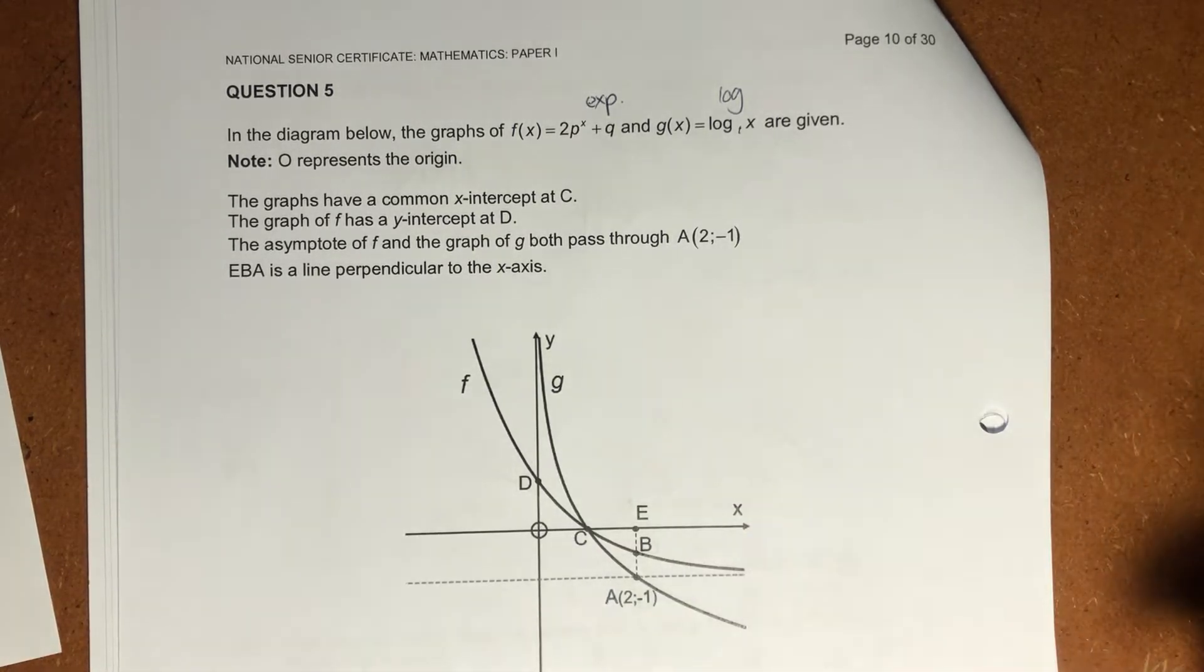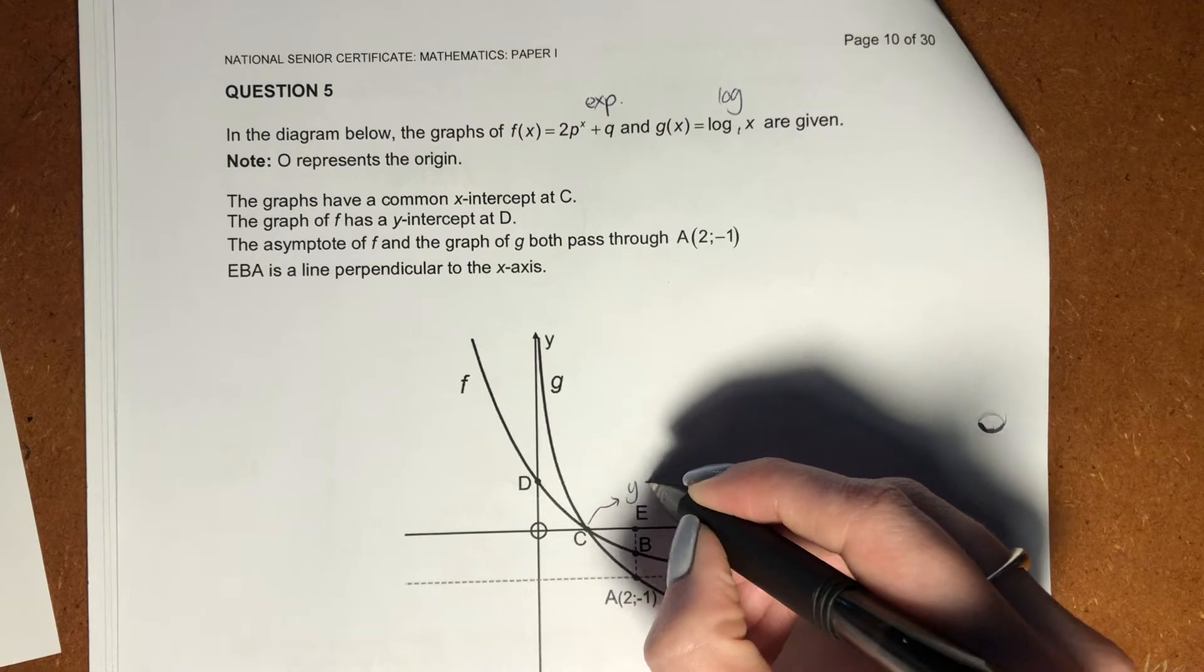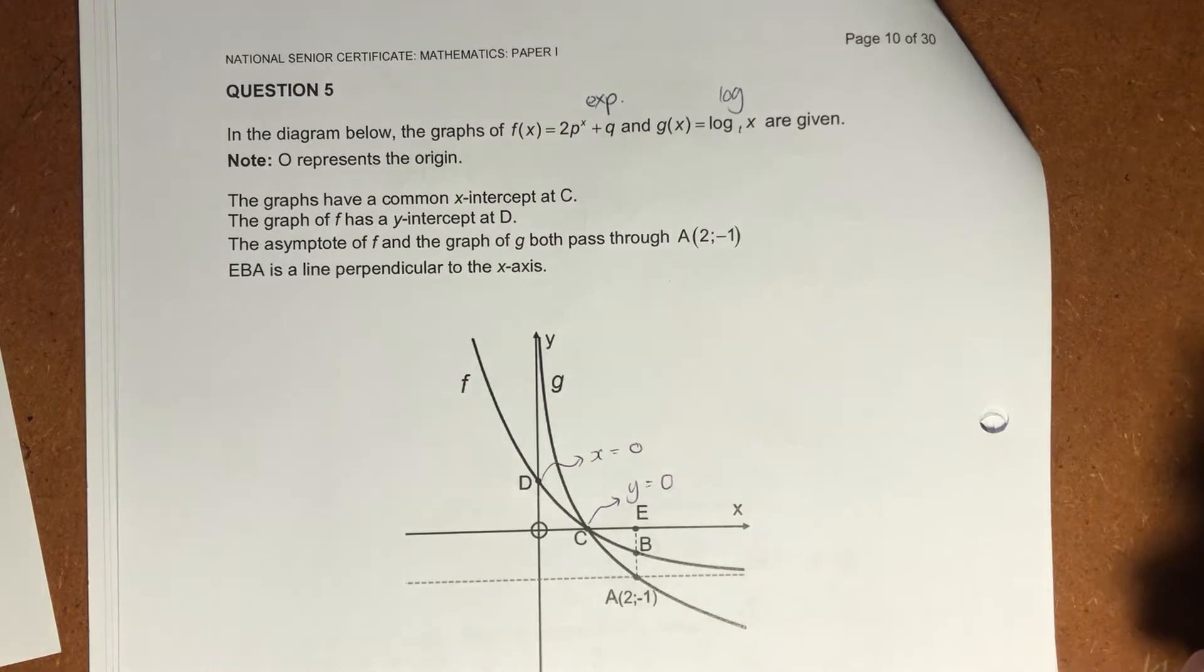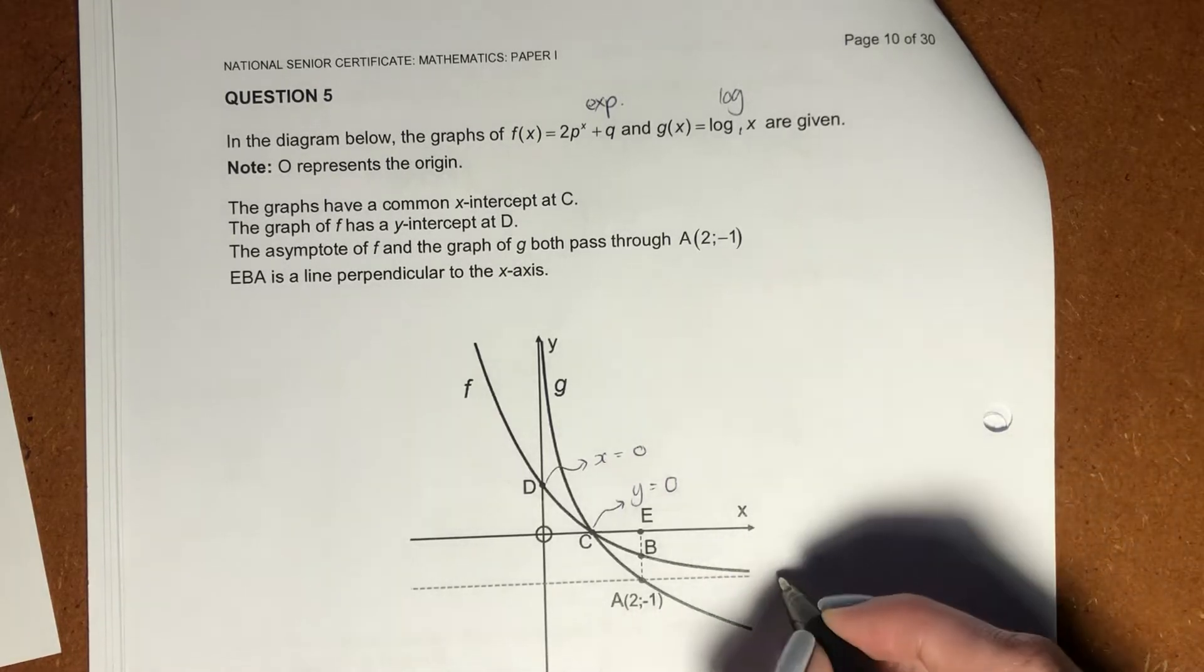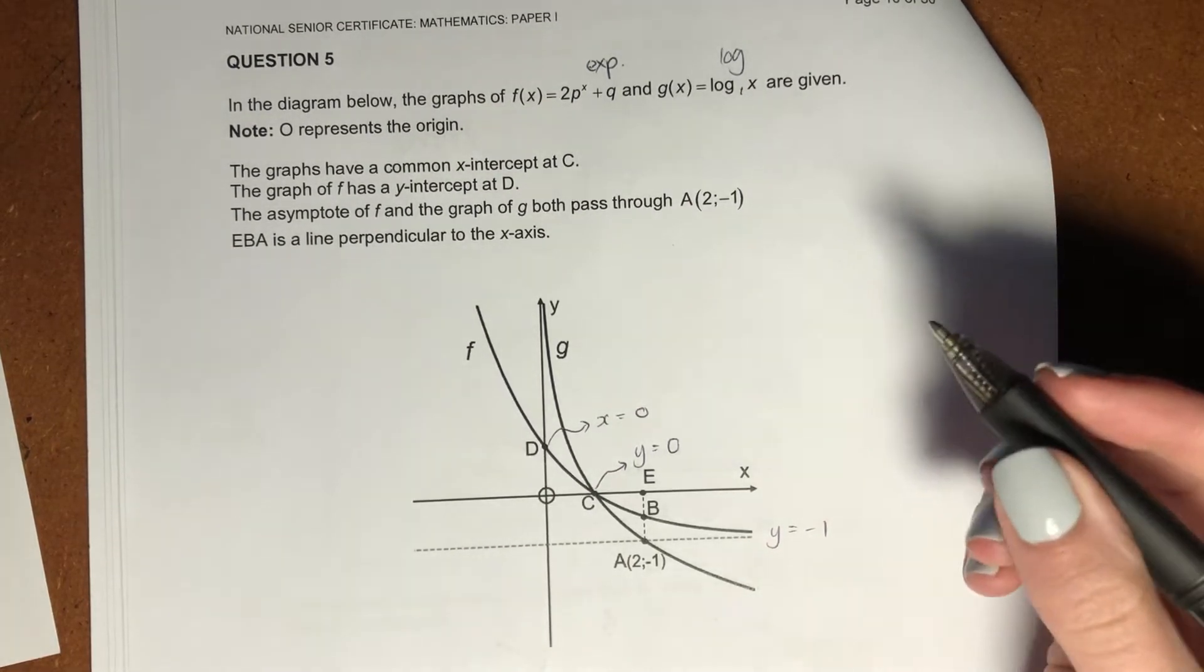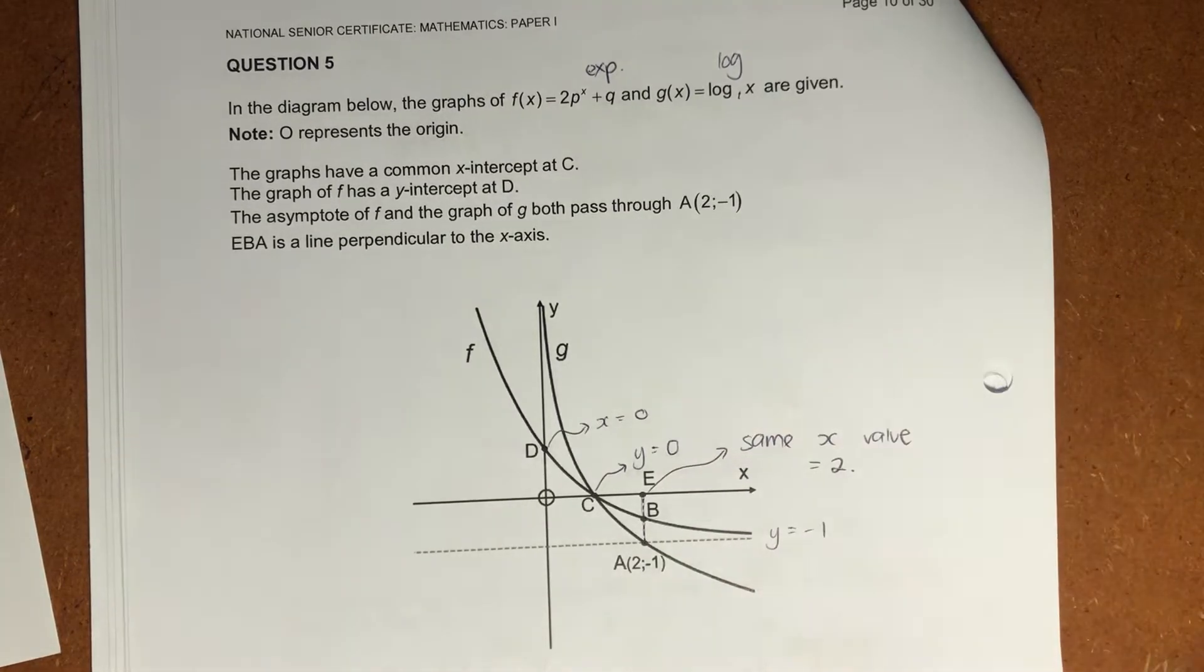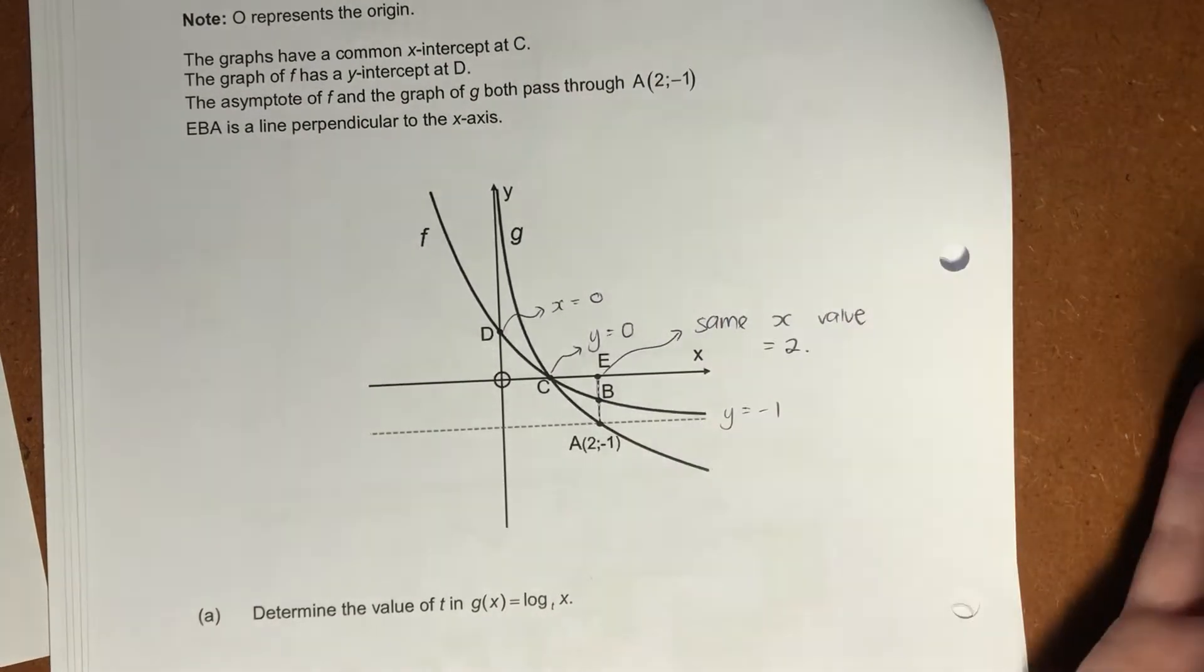So it says this is the origin. The graphs are on a common axis and they share an x-intercept. At an x-intercept, your y equals 0. And this d value here is a y-intercept. So your x is going to equal 0. Asymptote of f and the graph of g passes through a, which is 2 and negative 1. So we know this asymptote over here is where y equals negative 1. So we really have a bit of information. And EAB is a line perpendicular to axis. So basically, they all have the same x value, which in this case is going to be 2. So I've written all the information they've given me onto the graph. If you don't like doing that, that's up to you. But for me, it just helps contextualize what I'm doing.